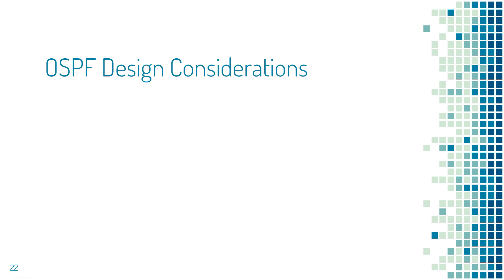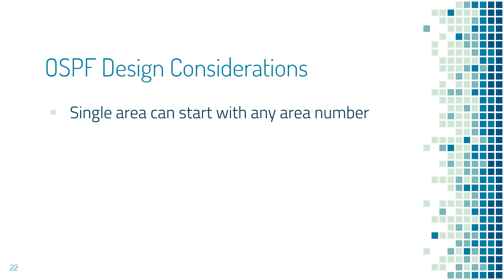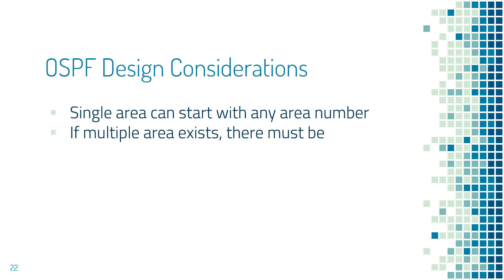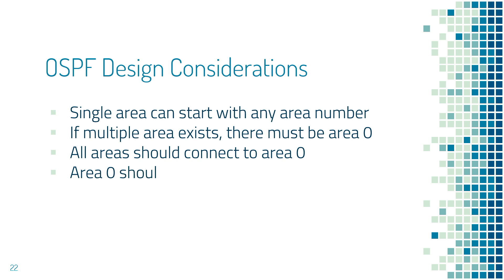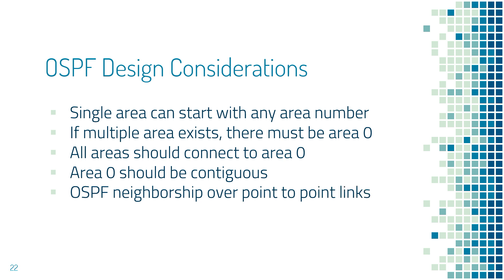When designing OSPF, a few things must be considered. If planning for OSPF with a single area, you can start with any number — it's not mandatory to always start with area zero. But if planning for multiple areas considering future requirements, area zero is a must. All other areas should connect to the backbone area, that is area zero. Area zero must be contiguous. You should not have a single area be part of two different area zero domains. If you have point-to-point links with Ethernet interfaces, by default OSPF considers it as a broadcast network and will elect DR and BDR. You can turn that off by changing the OSPF link type to point-to-point.